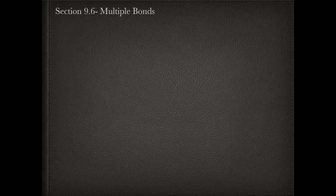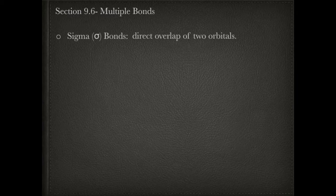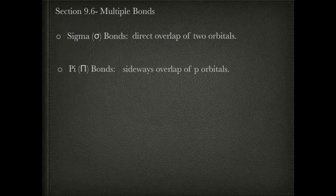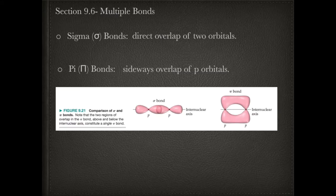The next concept involves the different types of bonds within single, double, and triple bonds. First, you have sigma bonds, which form when you have a direct overlap of two orbitals. Pi bonds result from a sideways overlap of P orbitals — they don't directly overlap one another. Here are two diagrams: the one on the left shows the sigma bond with a direct overlap, while the pi bond results from that sideways overlap of the P orbitals.